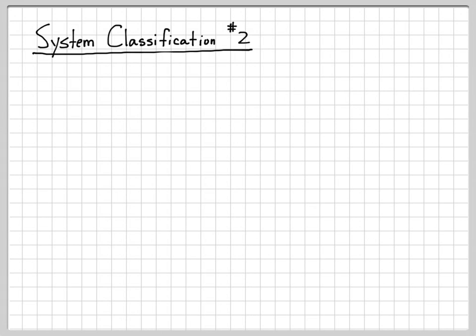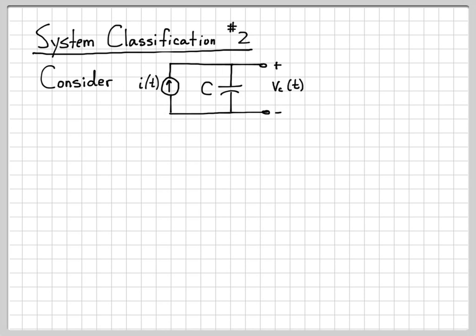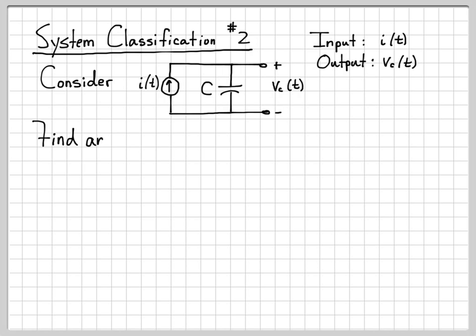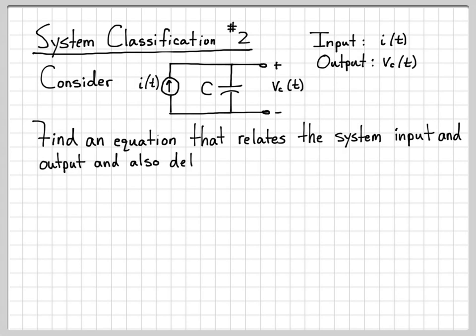In this video, we're going to work with a simple circuit. We're going to come up with an equation that relates the inputs and outputs of this circuit. And then based on that equation, we're going to classify the system in terms of the properties that it does or doesn't have. There is a current source on the left called I of T, which flows through the capacitor C. The voltage across that capacitor, V_C of T, is the system output — sometimes written as Y of T. So the input is I of T and the output is the voltage across the capacitor.